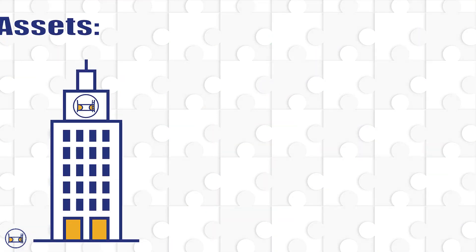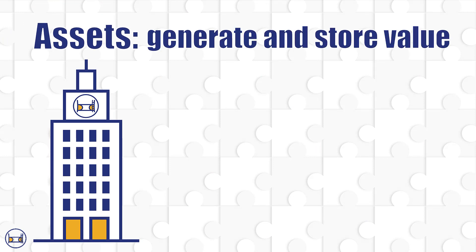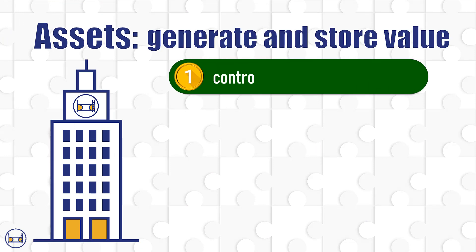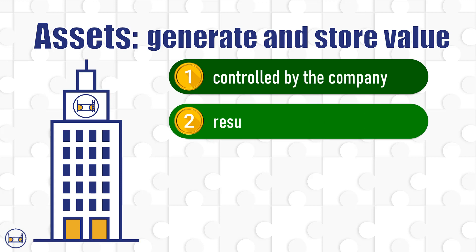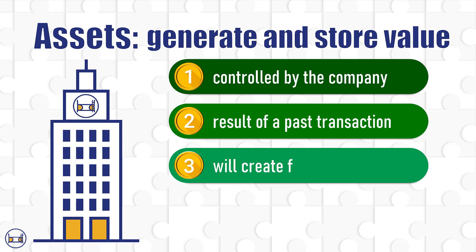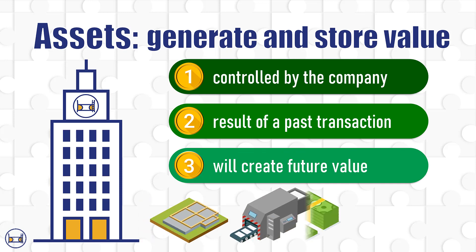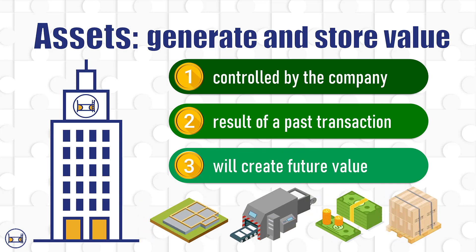A company is made up of assets. Assets are what the company uses to generate and store value. An asset is anything that the company controls that was acquired through a past transaction and that will create future value for the company, such as land, equipment, cash, and inventory.